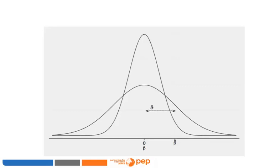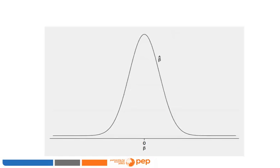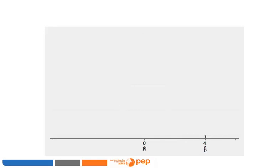This is the estimated distribution we would have if the treatment effect were zero. We then compare our point estimate beta-hat with this hypothetical distribution. Suppose we obtain a beta-hat equal to four — it is clearly very unlikely that this beta-hat came from a distribution centered on zero. If this were the true distribution, we should have obtained some value around zero, not four. In this first example, we conclude that the distribution centered on zero is the wrong distribution.